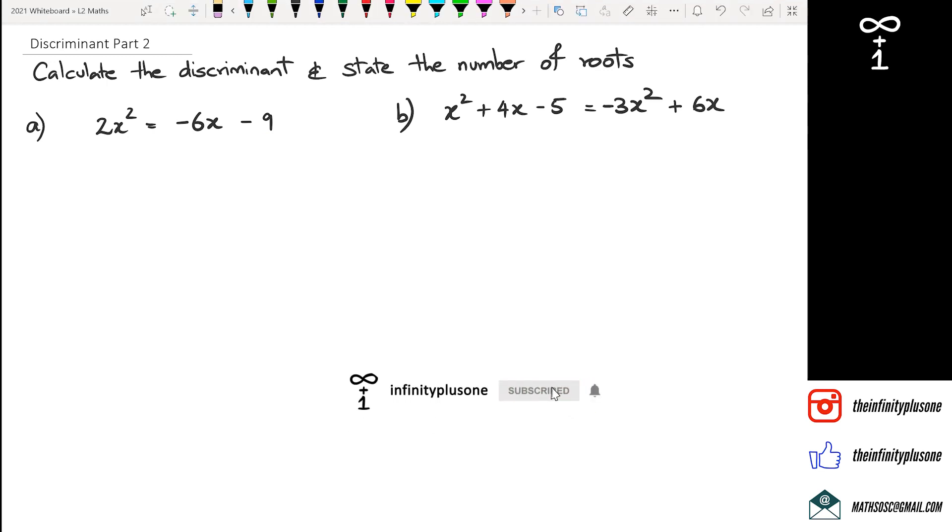What we've got here is question a. The first thing we need to do is rearrange, so we're going to rearrange this to be 2x² + 6x + 9, and that's now equal to 0. Next we have our a value, we've got our b value which is positive 6, and c value which is positive 9.